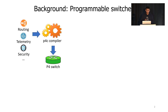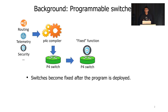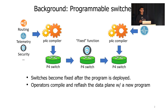P4 has enabled rapid and easy development of new network functions. But how fast we can deploy this function into the network is a very different thing. Today's programmable switches are only programmable at compile time, which means once the P4 program is compiled and loaded to the switch hardware, the switch will become fixed. To change the switch function, operators must recompile and reflash the pipeline with the new P4 program, and this will cause downtime and packet loss.